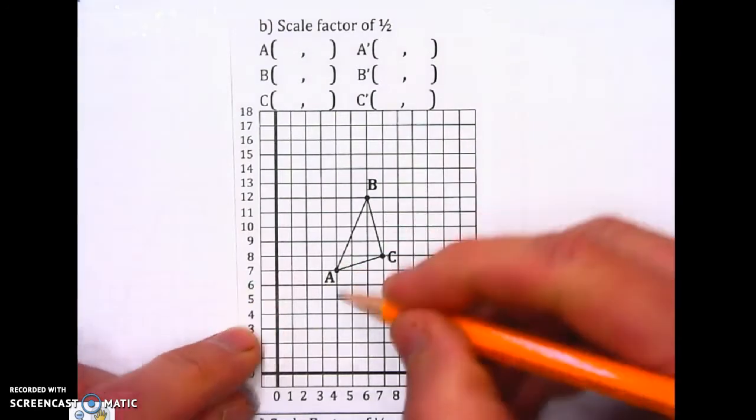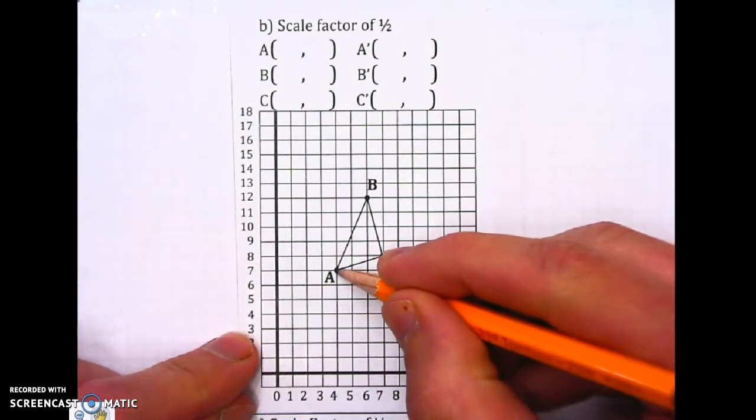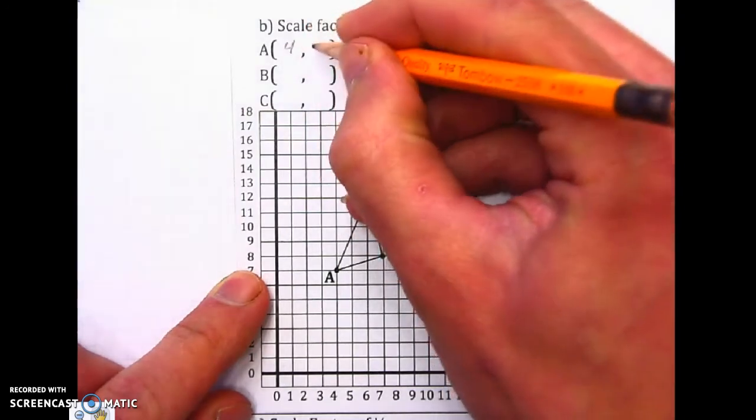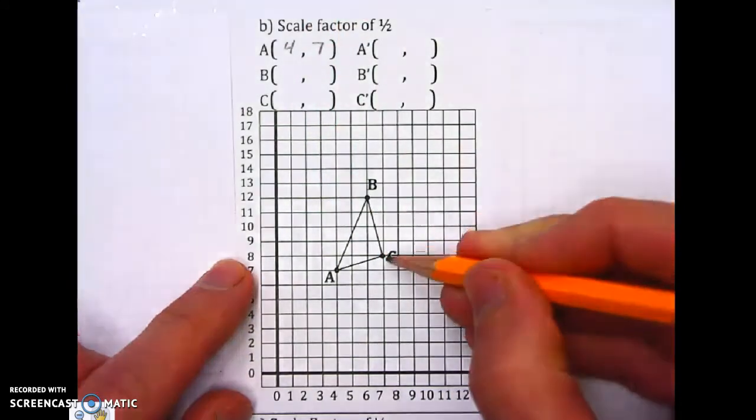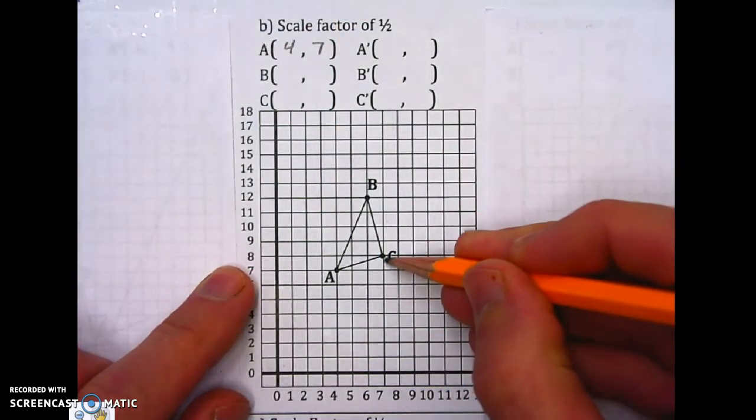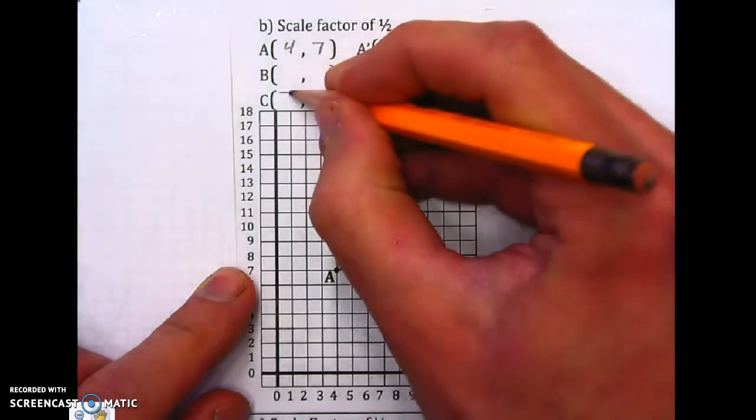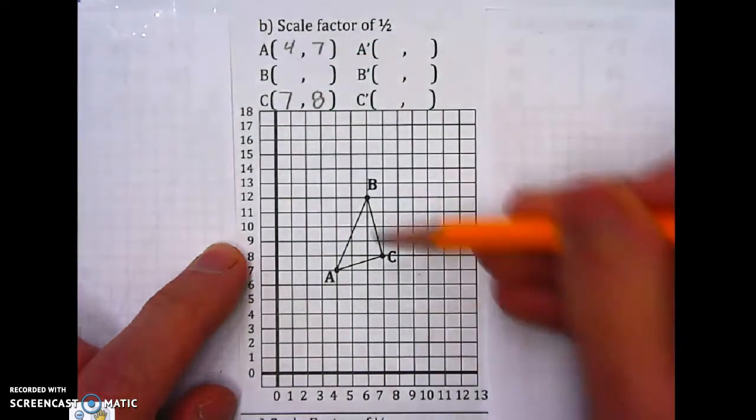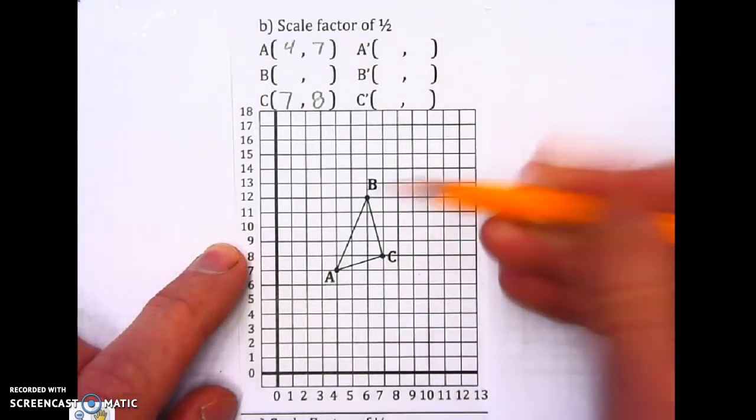So writing down A looks like I'm at 4, 7. C looks like it's at 7, 8. And B looks like it's at 6, 12.